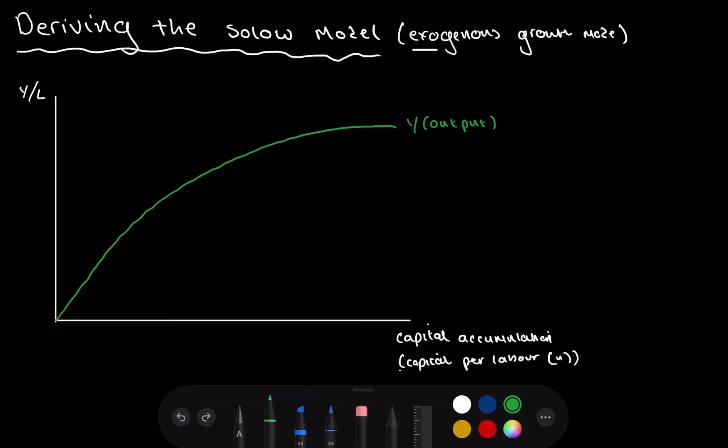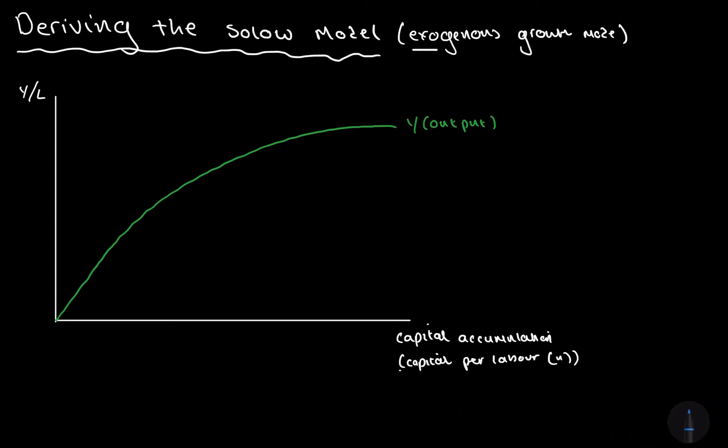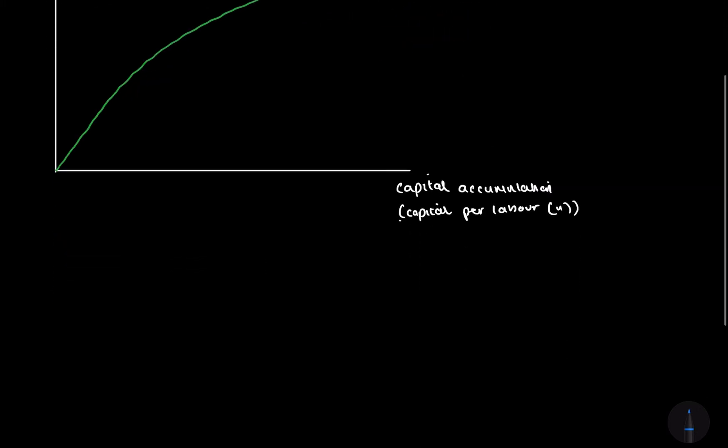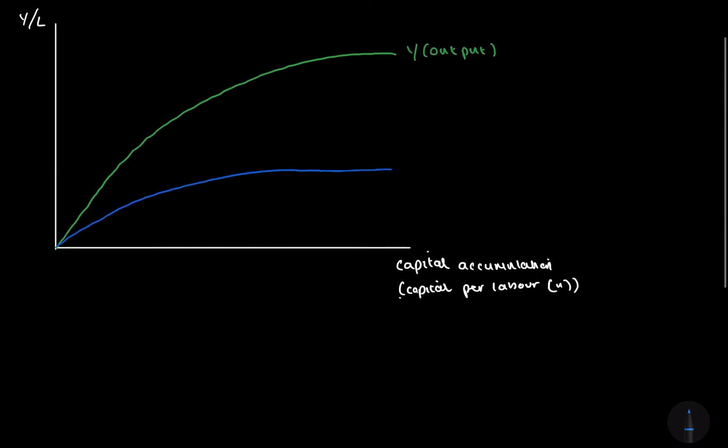After this, since we have output increasing, if output's increasing, incomes are going to increase. If incomes increase, savings are going to increase. An increase in savings also means an increase in investment. So, I'll draw the investment curve here and explain why it is also this shape.